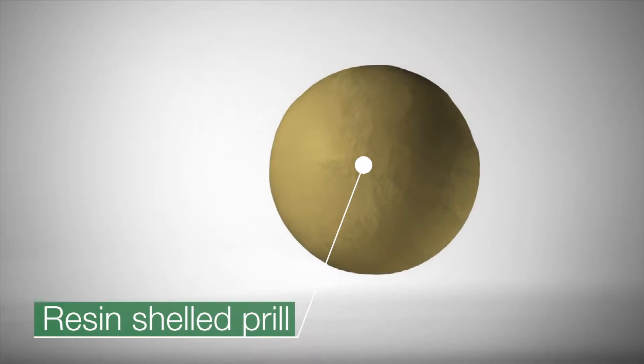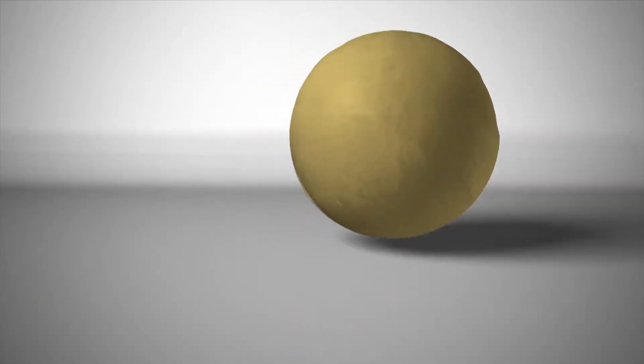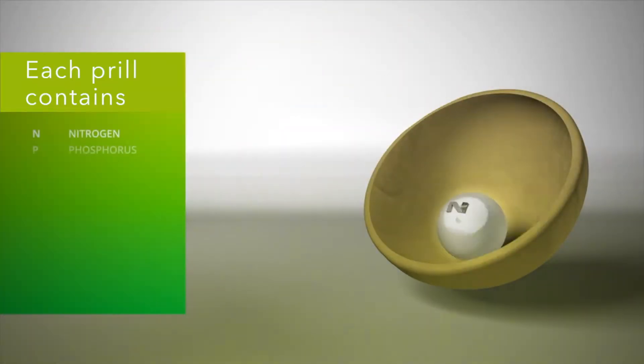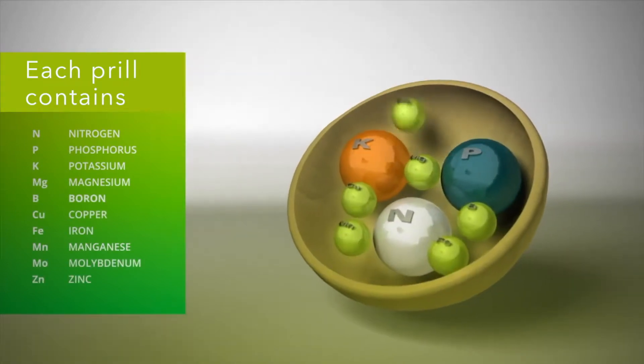Osmocote prills have a special resin shell that controls nutrient release. Each prill contains nitrogen, phosphorus, potassium and essential trace elements.